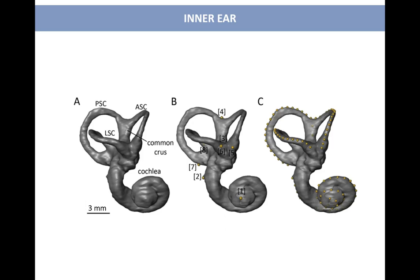We wanted to see how the inner ear of Littlefoot could differ from other specimens, but also from other fossil species from our family tree. This is the reason why we decided to quantify the shape and compare it with other species. For this we used a technique known as geometric morphometrics, using landmarks that you can see here in yellow, which reflect the shape of the inner ear and allow us to quantify it.